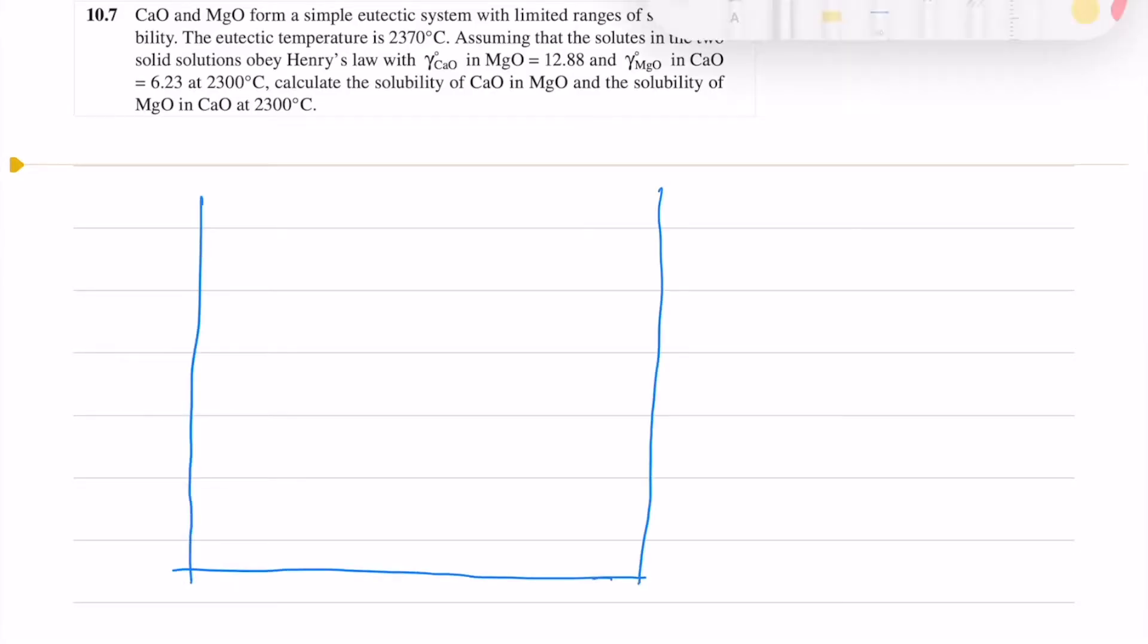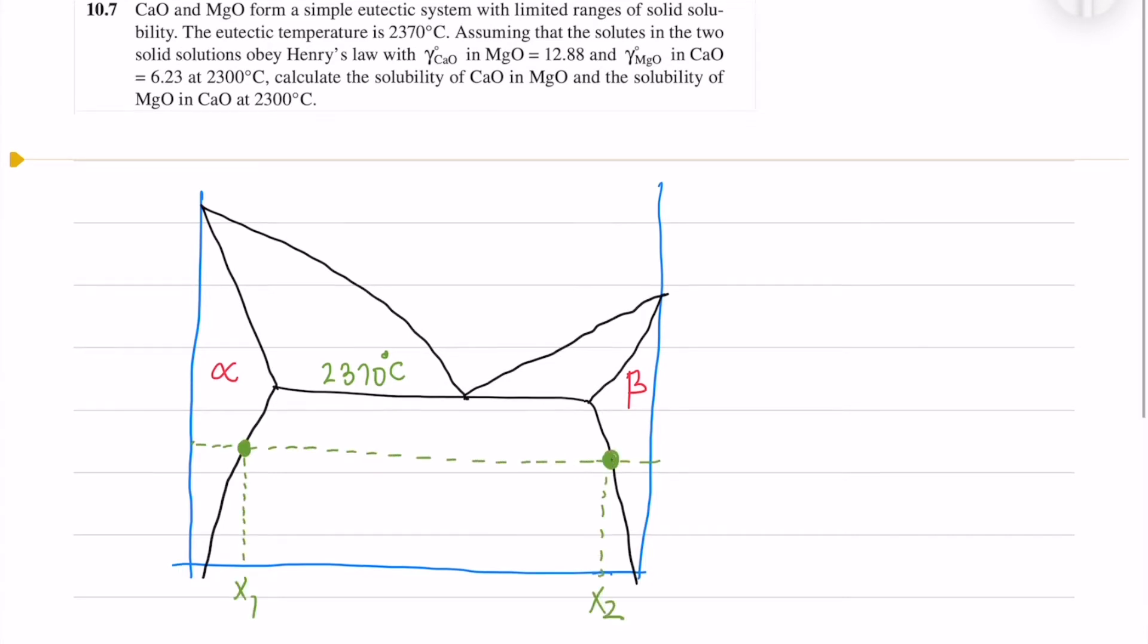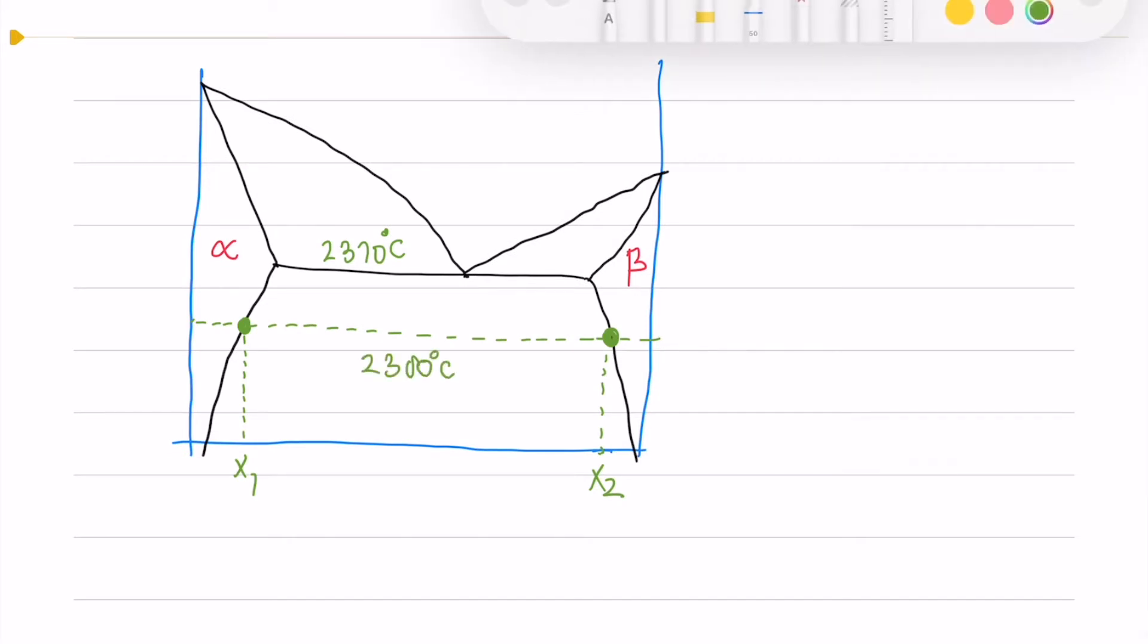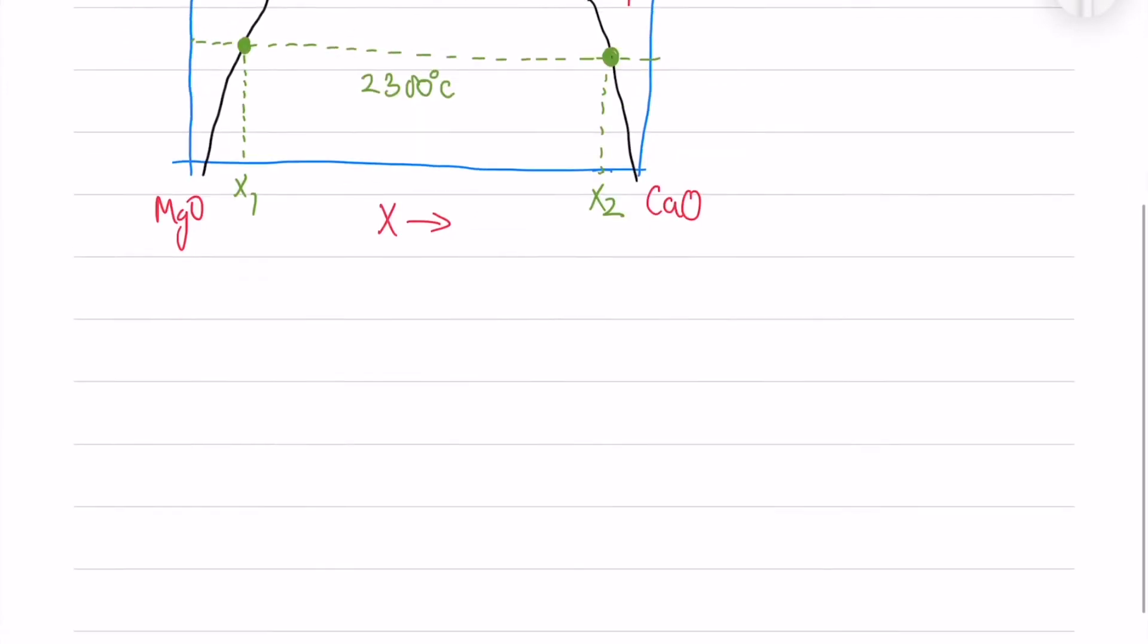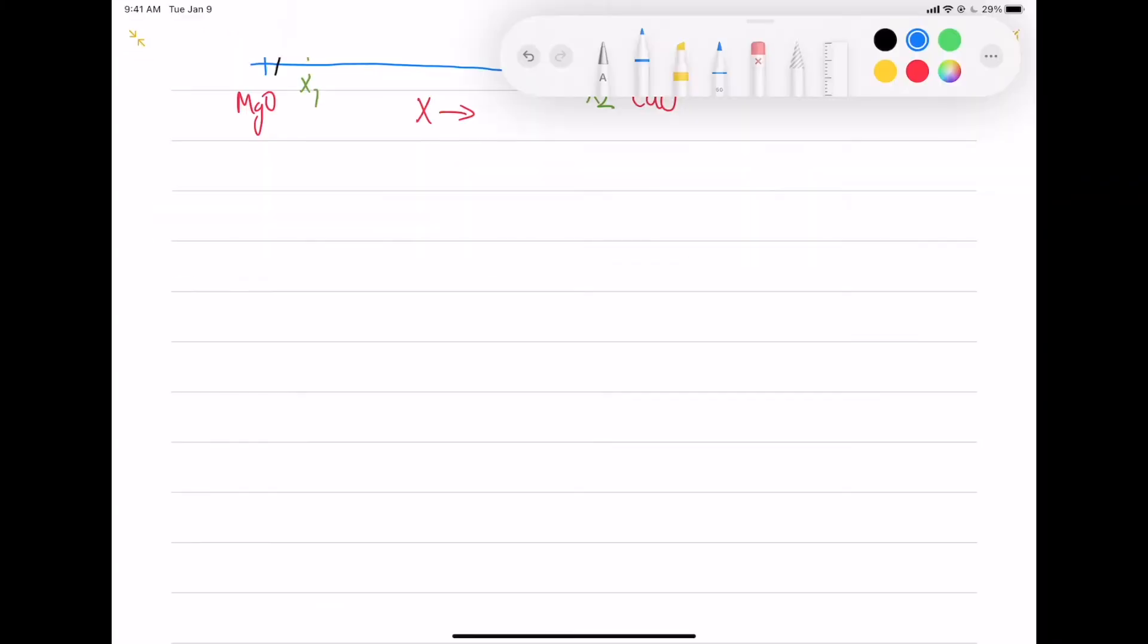In this question, you are given a simple eutectic system containing calcium oxide and magnesium oxide. It has alpha and beta phases and a eutectic temperature at 2370°C. We have 2300 degree Celsius at the tie-line where we have to find out the compositions of X1 and X2.